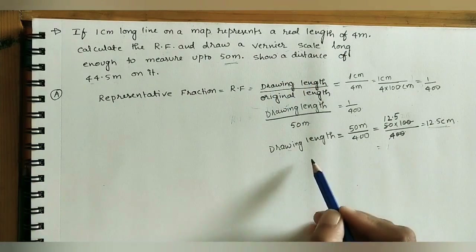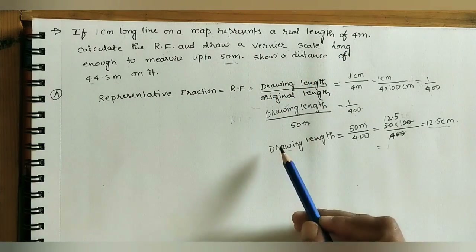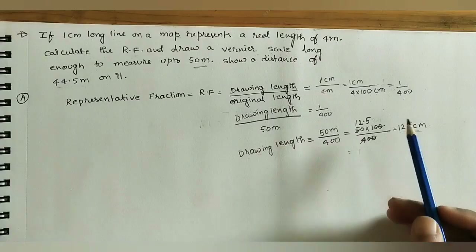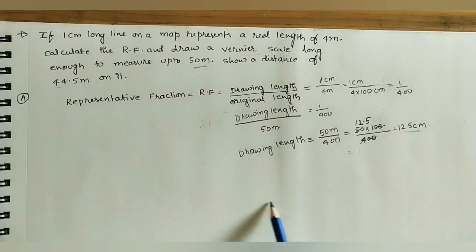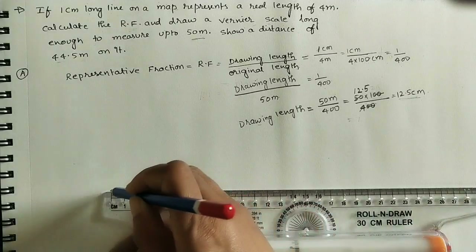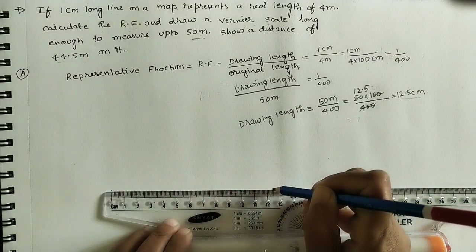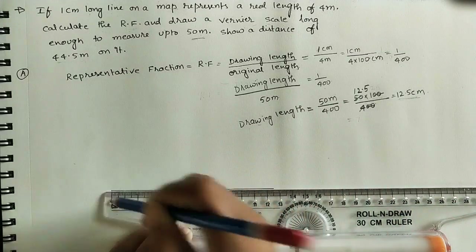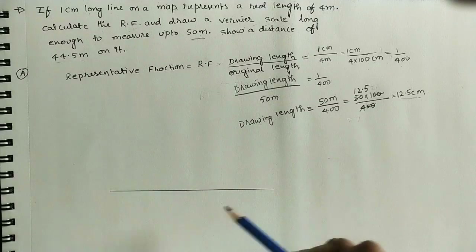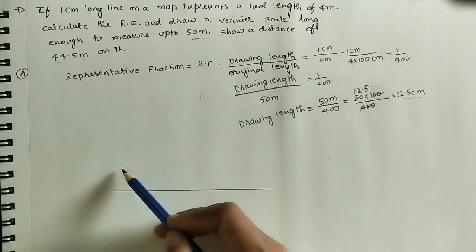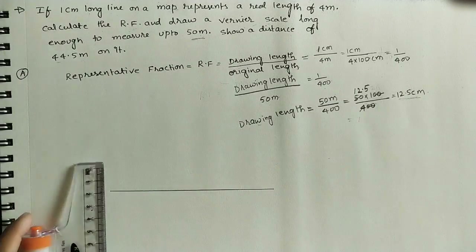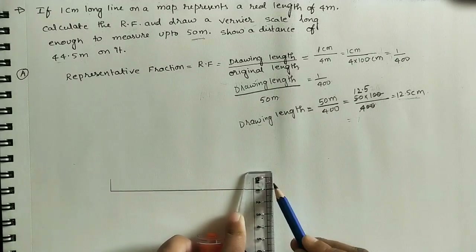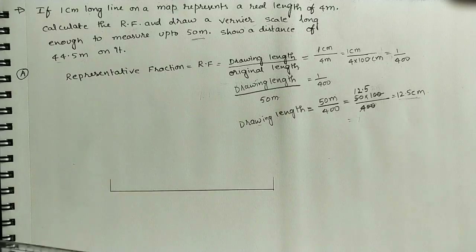Mark 12.5 centimeters on the sheet and mark the endpoints. Draw a line, then take a one centimeter height to make one box. Join the two ends to form the main scale rectangle.